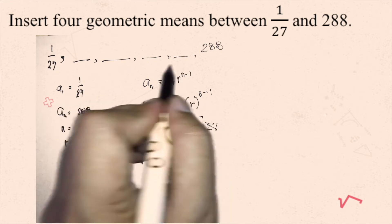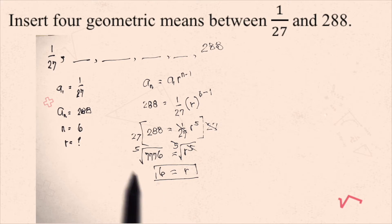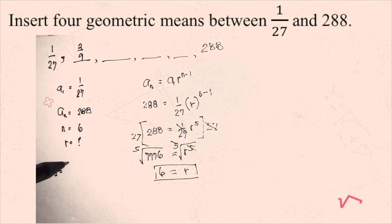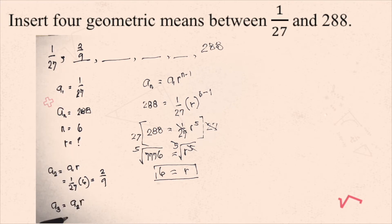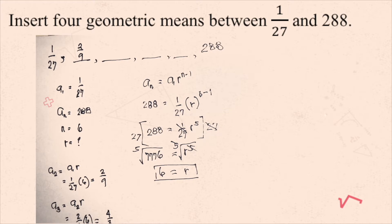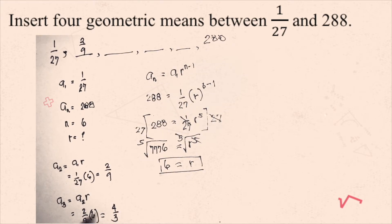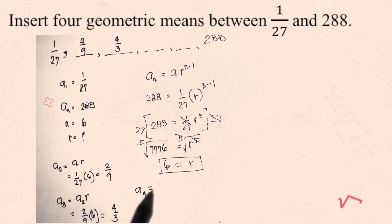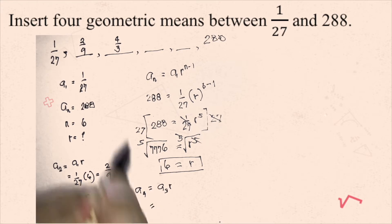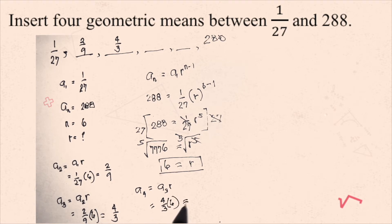With the common ratio of 6, we can find the geometric means by multiplying each term by r. To get the second term: 1/27 times 6 equals 2/9. To get the third term, multiply 2/9 by 6, which gives 4/3. The fourth term is 4/3 times 6, which equals 8.